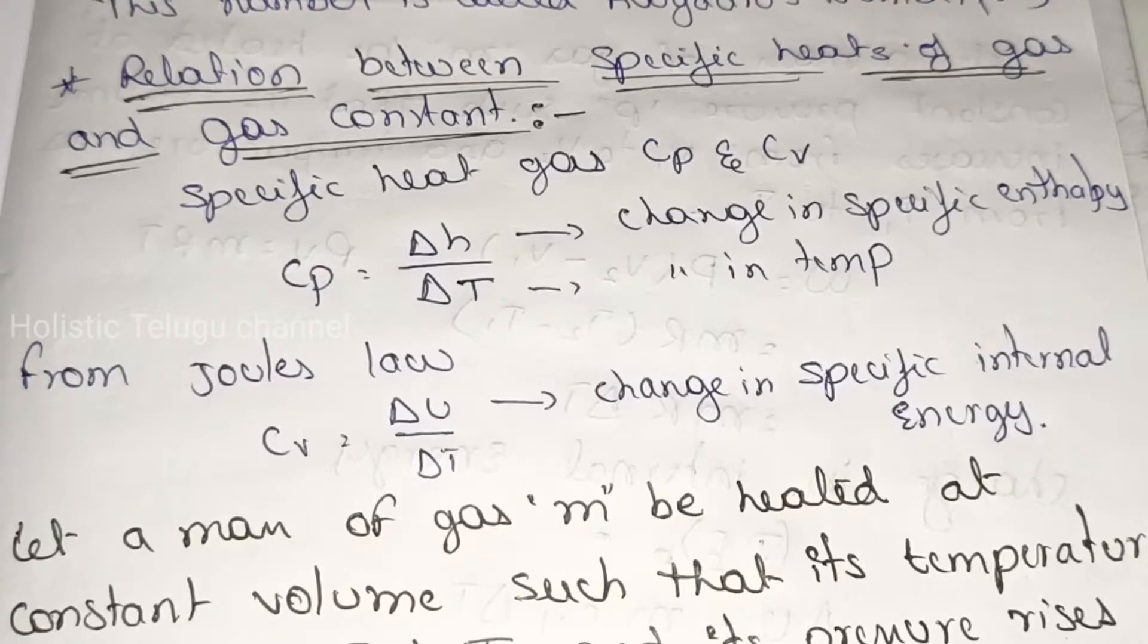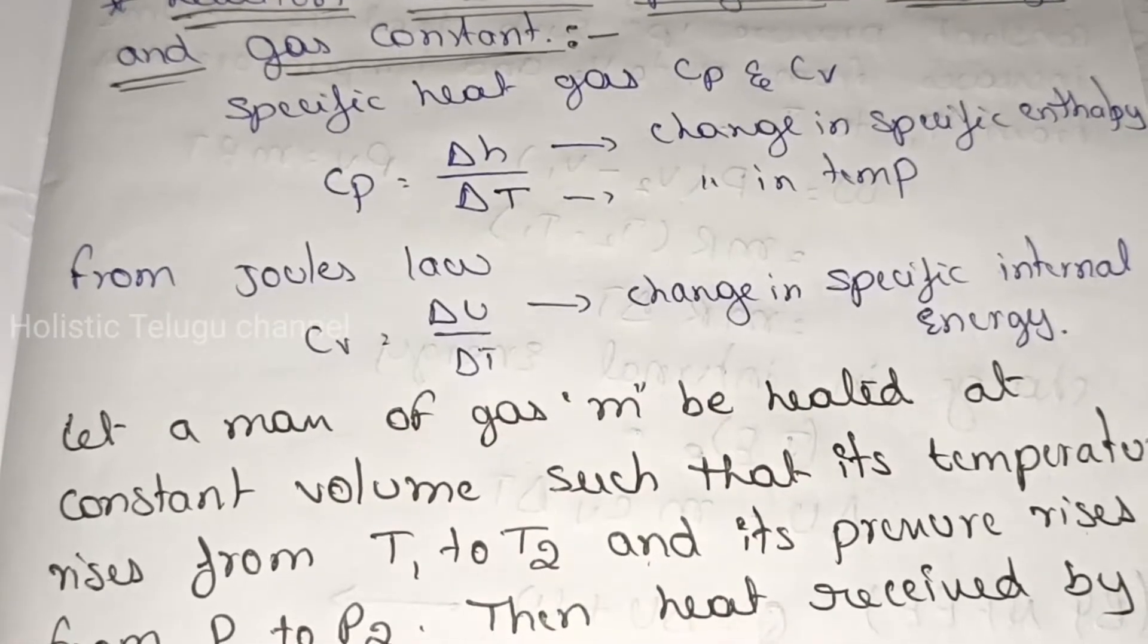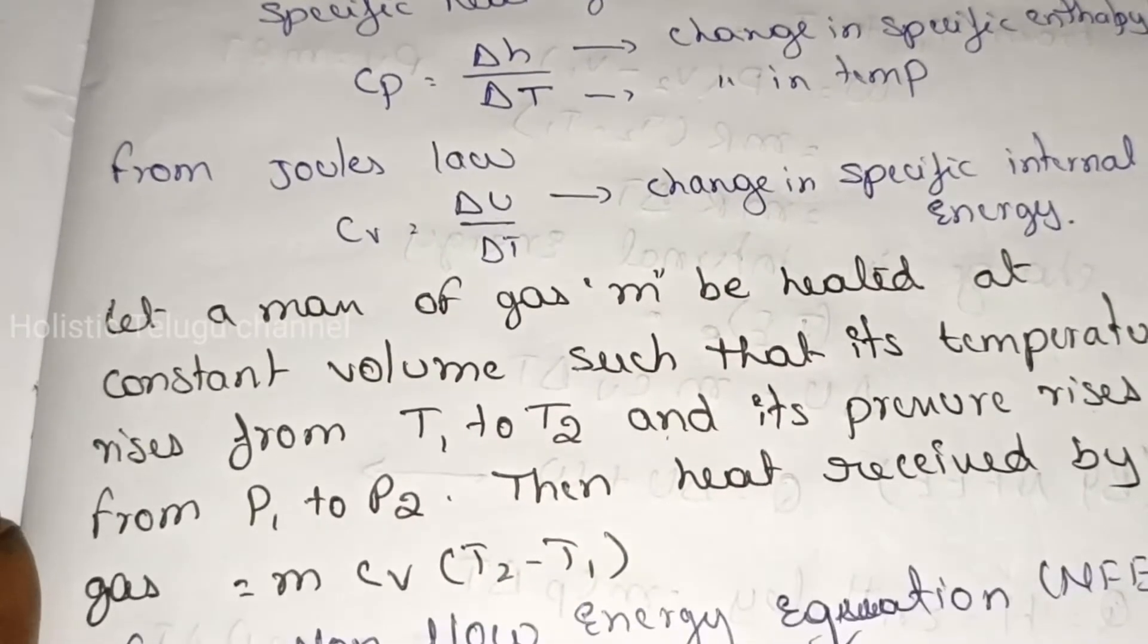Delta H is a change in specific enthalpy. Delta T is a change in temperature. From Joules law, Cv is the change in specific internal energy by change in temperature.